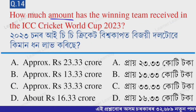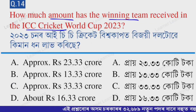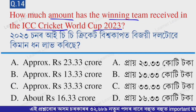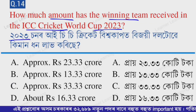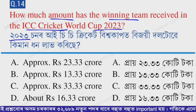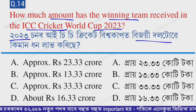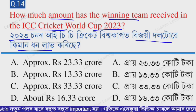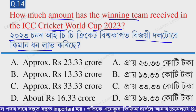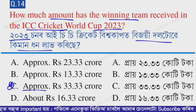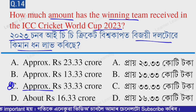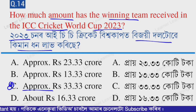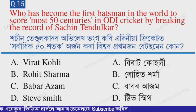Next question: how much prize money did the winning team receive in the ICC Cricket World Cup 2023? The correct option is option C — approximately 33.33 crore rupees.